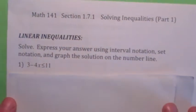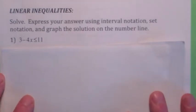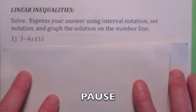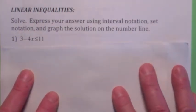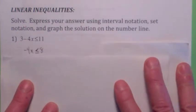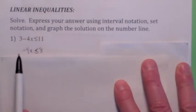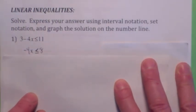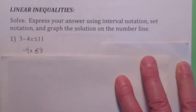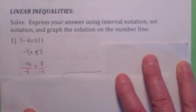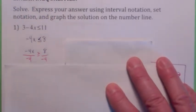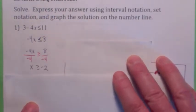See if you can solve this linear inequality and express your solution in interval notation, set notation, and graph your solution on the number line. When you solve this, you solve it just like an equation except for one thing. Remember, when you multiply or divide by a negative number, you have to switch the direction of the inequality symbol. So when you subtract 3 from both sides, you still get this. But when you divide by negative 4, you've got to switch the direction of the inequality symbol. So x is greater than or equal to negative 2.